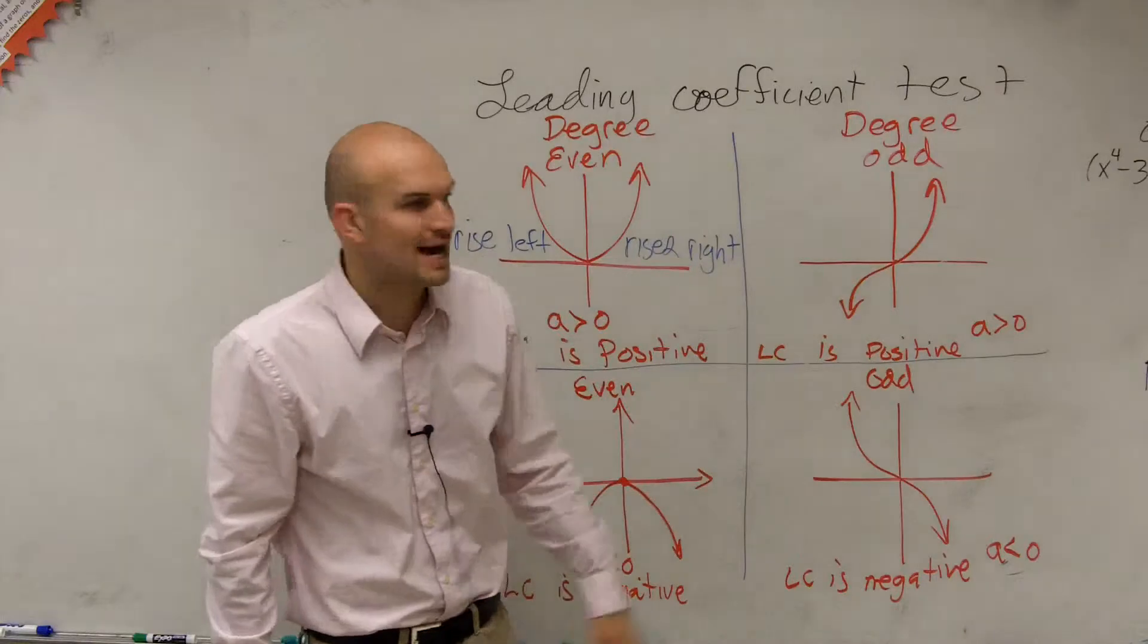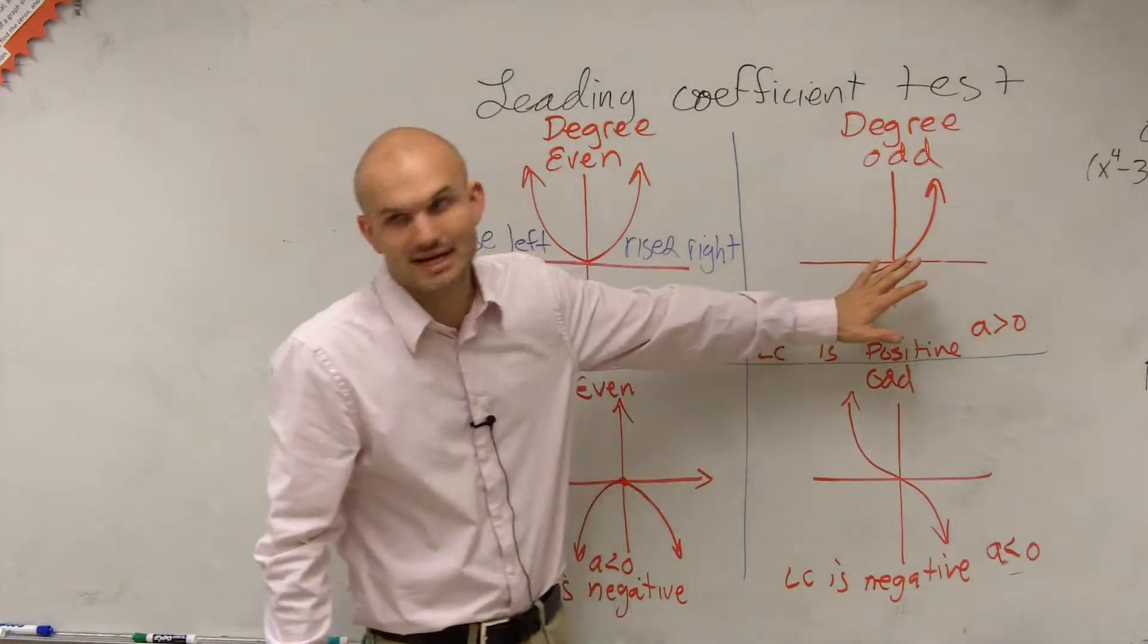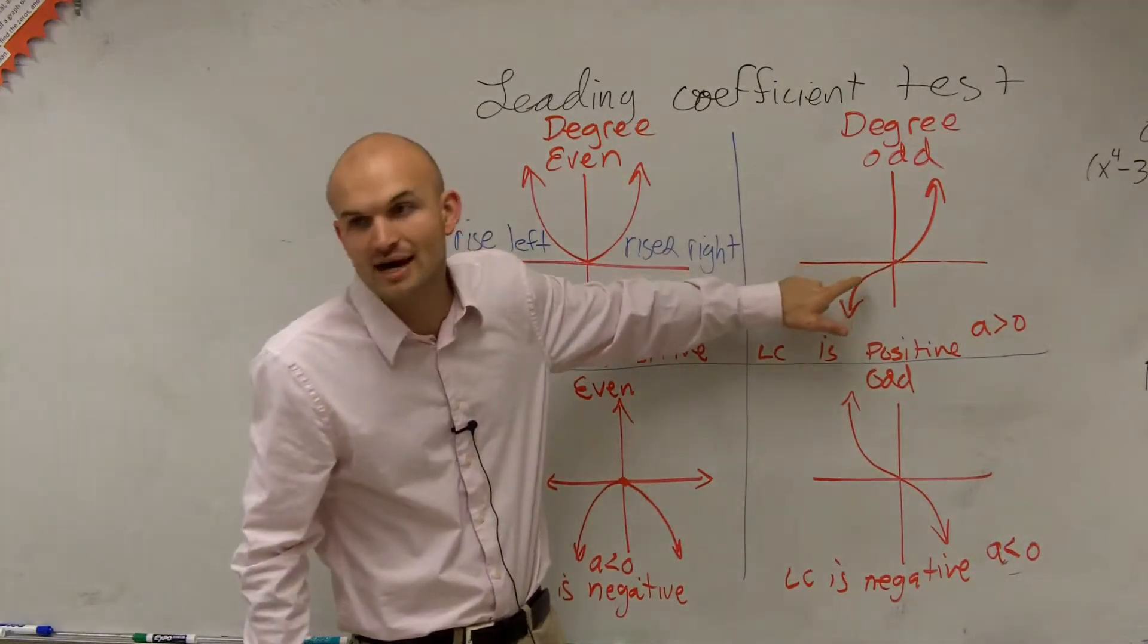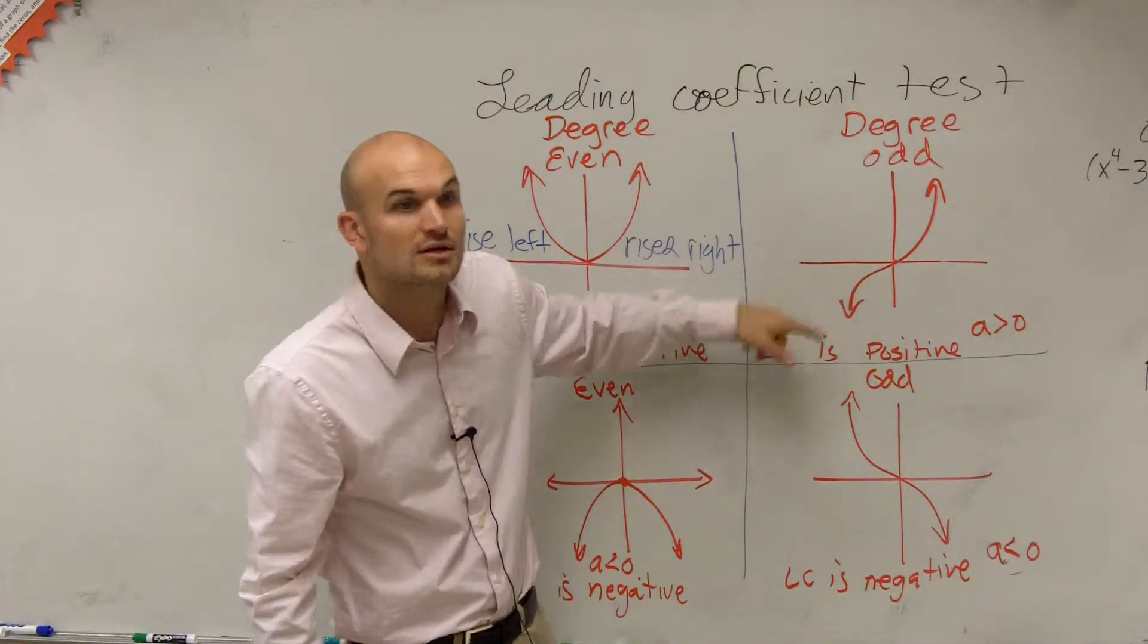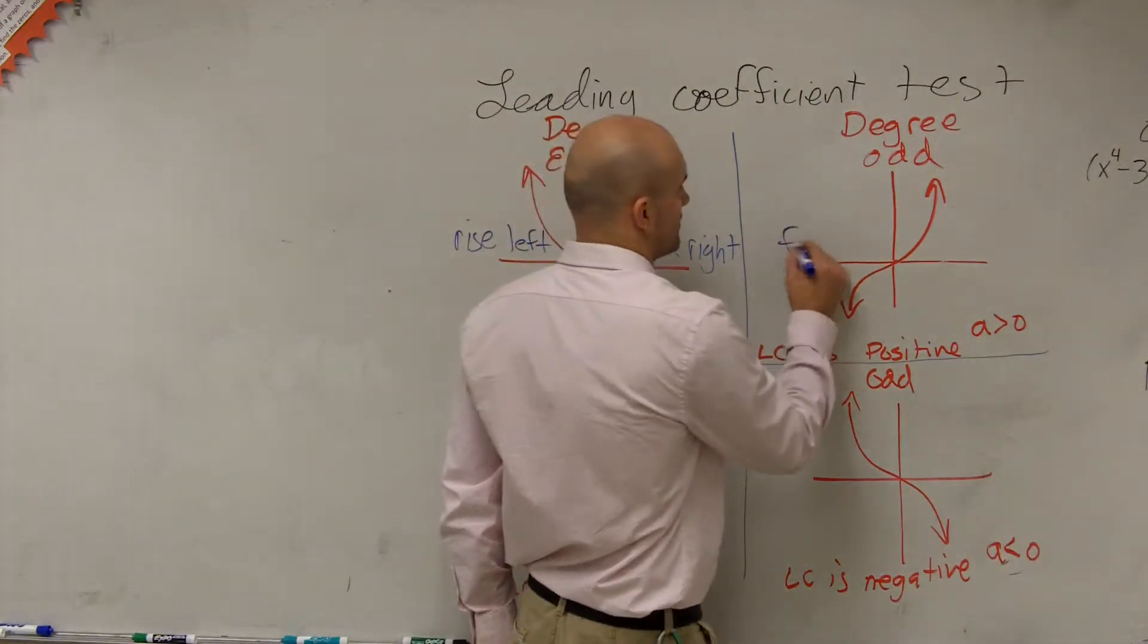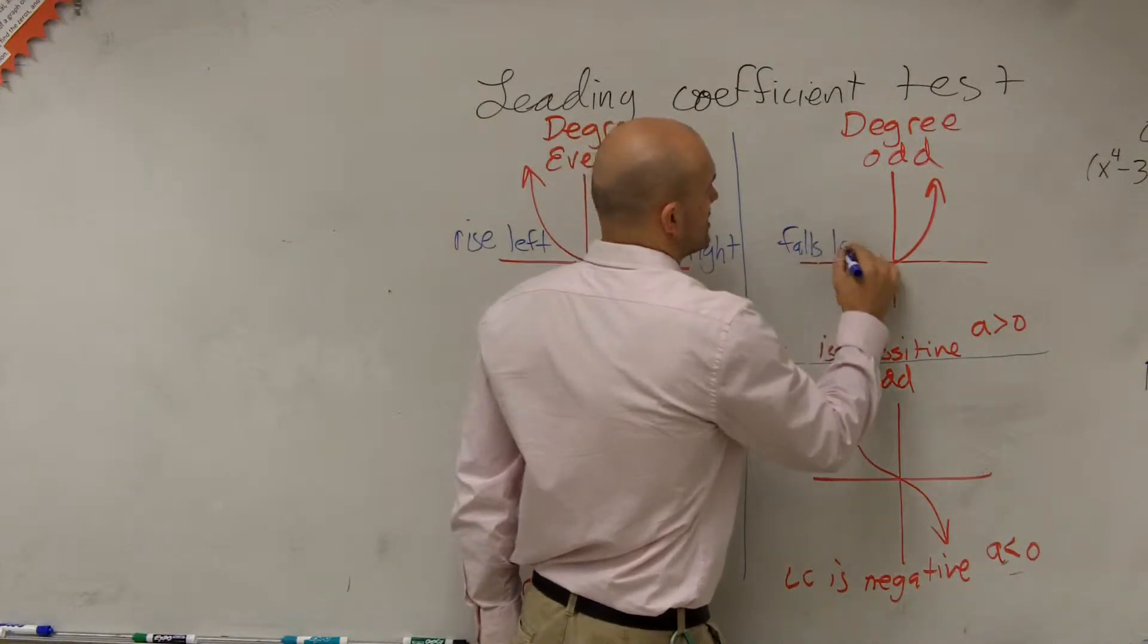What about when we look at the degree as odd? As I move to the left on the x-axis, is my graph falling or rising as I move to the left? It's falling. So you could say it falls left.